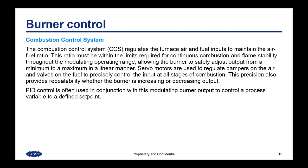The combustion control system regulates the furnace air and fuel inputs to maintain the air-fuel ratio. This ratio must be within the limits required for continuous combustion and flame stability throughout the modulating range, allowing the burner to safely adjust output from minimum to maximum in a linear manner. Servo motors are used to regulate dampers on the air as well as valves on the fuel. PID control is often used in conjunction with the modulating burner output to control a process variable to a defined set point.